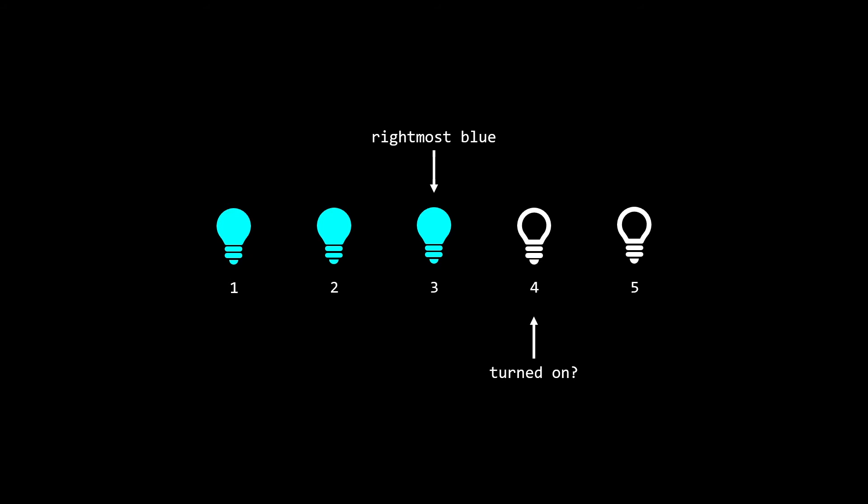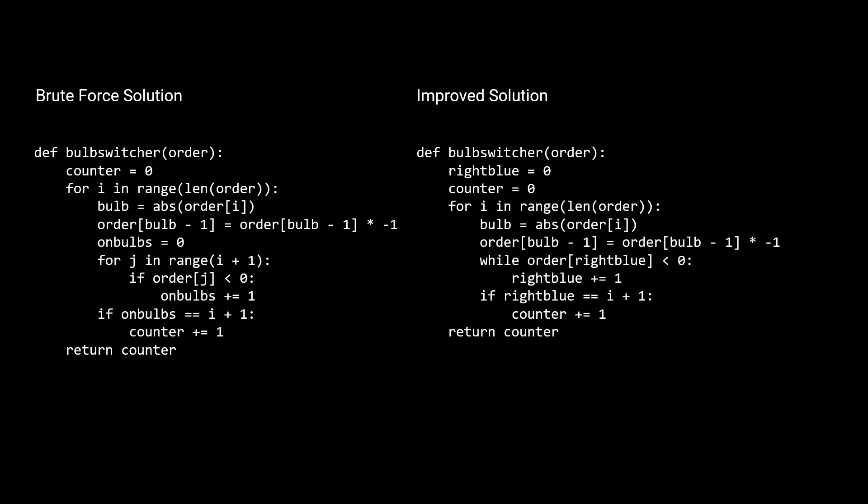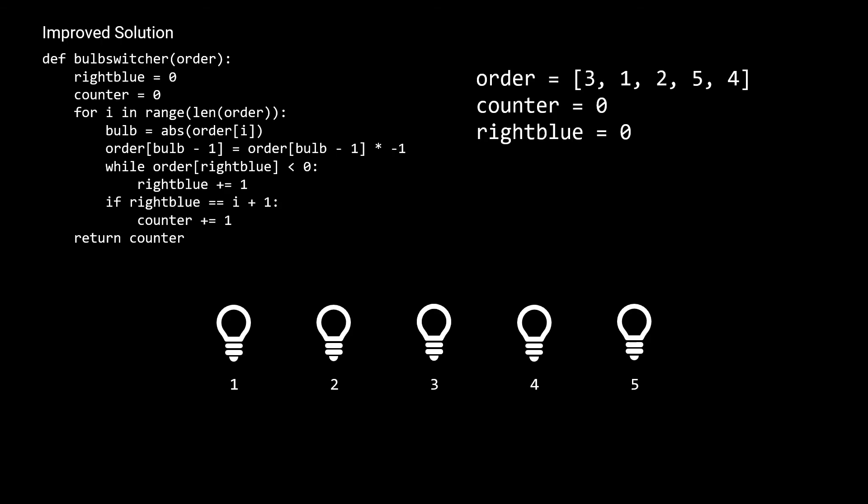Let's look at the actual code for the improved solution. Notice that the code is similar, but we've replaced the inner for loop with a while loop. You might be skeptical if this algorithm is O(n) because of the nested while loop — just trust me for now and I'll explain why it's O(n) later in the time analysis. But first, let's walk through this example with the improved solution's code.